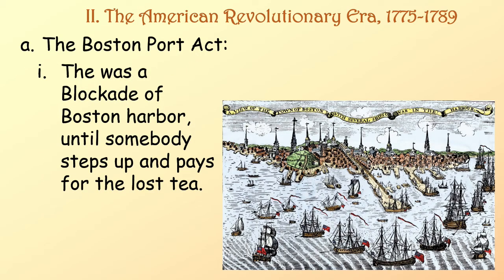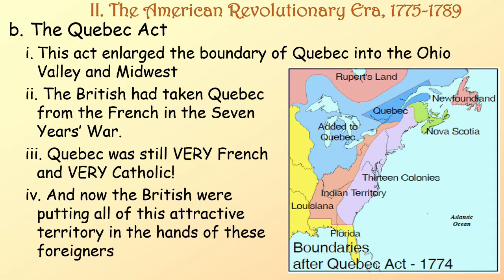The first of the Coercive Acts was the Boston Port Act — basically a blockade of Boston Harbor until somebody stepped up to pay for the lost tea. The second was the Quebec Act, which enlarged the boundary of Quebec deep into the Ohio Valley and the Midwest. The British had taken Quebec from the French in the Seven Years' War. Quebec was still very French and very Catholic, and now the British were putting all of this attractive territory into the hands of these foreigners.